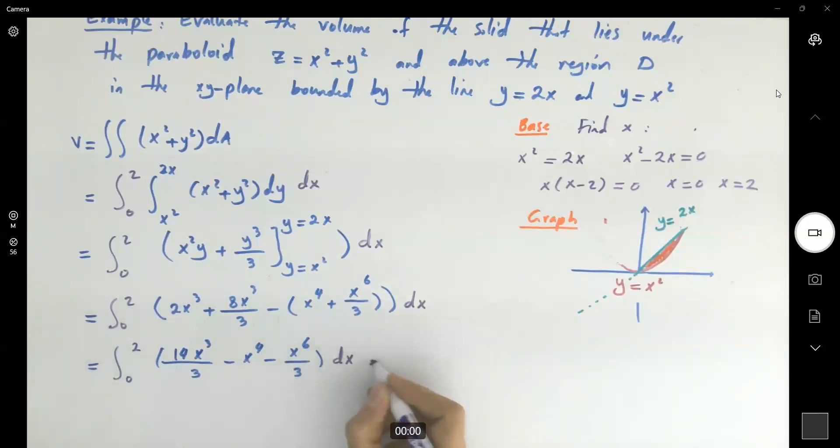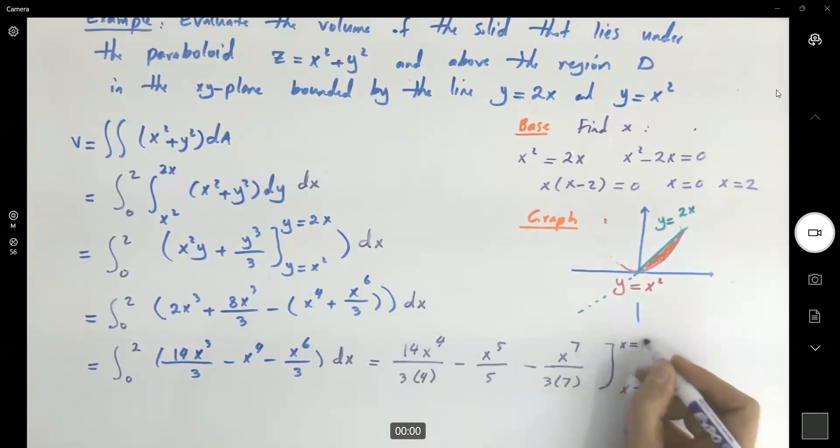This guy becomes, here we go. Here you have 14 x to the 4 divided by 3 times 4 minus x to the 5 divided by 5 minus x to the 7 divided by 3 times 7, and x is bounded between 0 to 2.